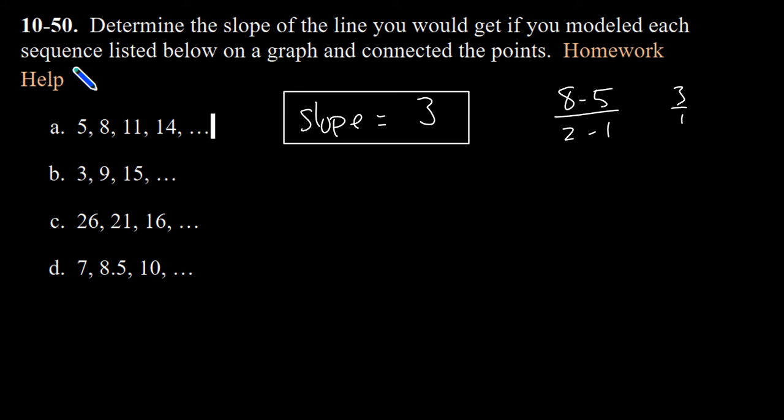So this first one has a slope of 3. The next one is 3 plus 6 is 9, and 9 plus 6 is 15, so this has a slope that is equal to 6 because I'm increasing by 6 each time.